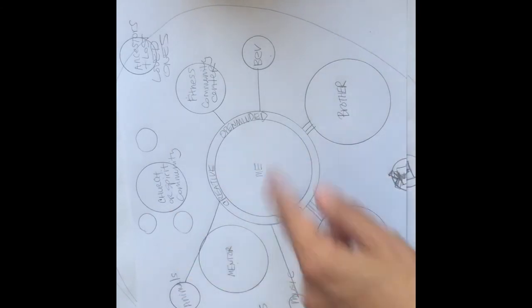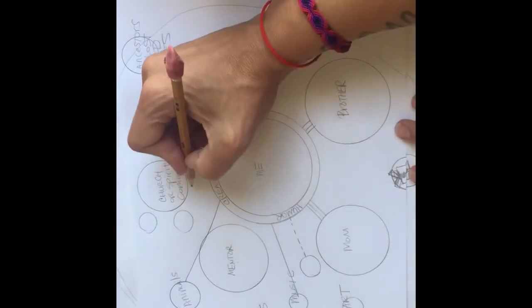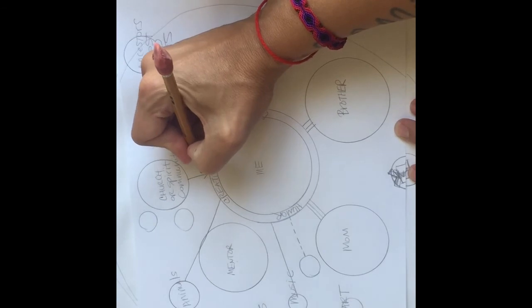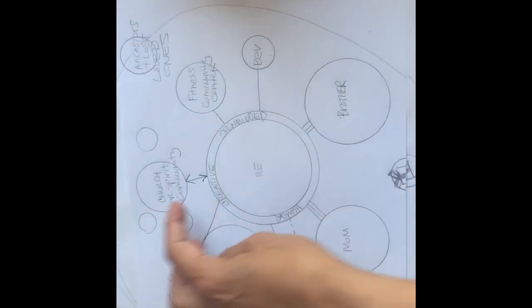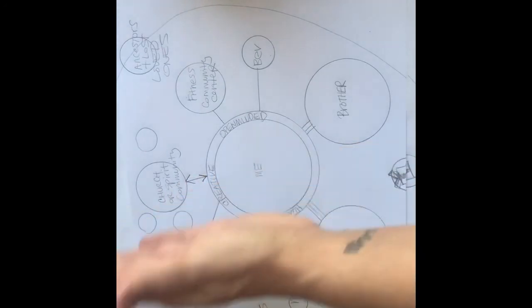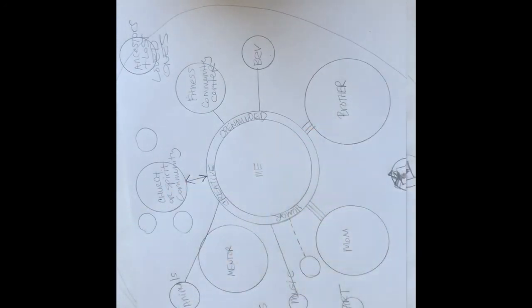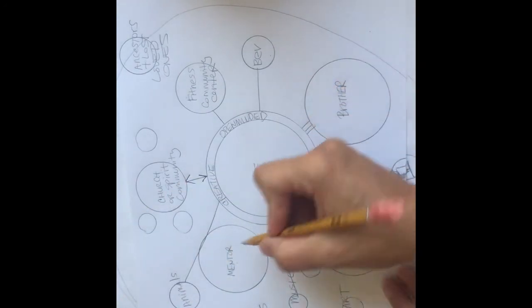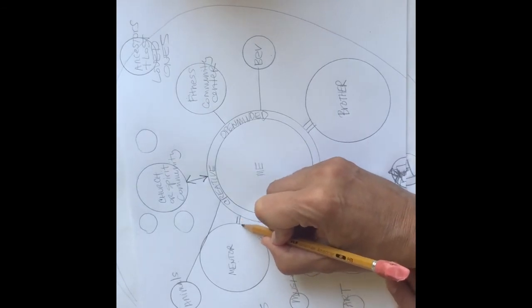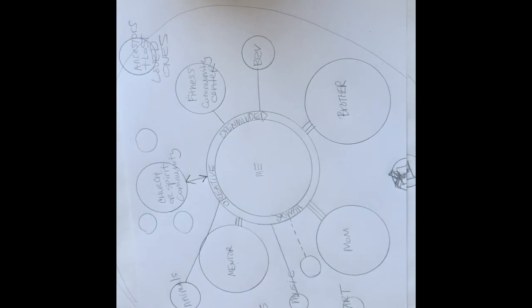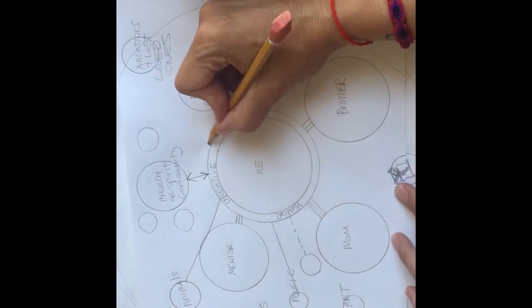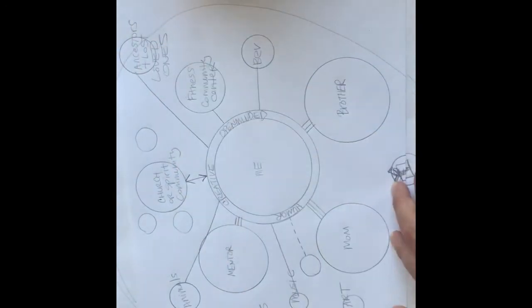Also traditional Ecomaps suggests that we use arrows. So for example, I might want to do an arrow where the energy flows from both my community supports and back and forth because it's really a nice big exchange. And then, so you go back through and contemplate the connections that you have with each of these different resources that you've drawn onto your Ecomap.